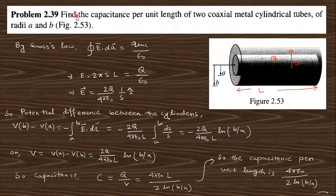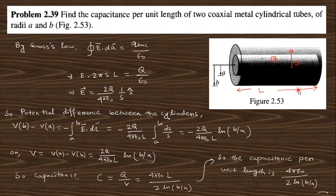Go to the next question, 2.39: find the capacitance per unit length of two coaxial metal cylindrical tubes of radii a and b. For capacitance C = Q/V, we need to find the potential difference, which requires knowing the electric field between the cylinders.